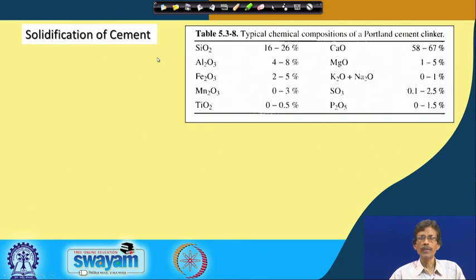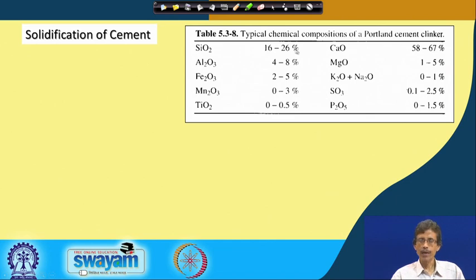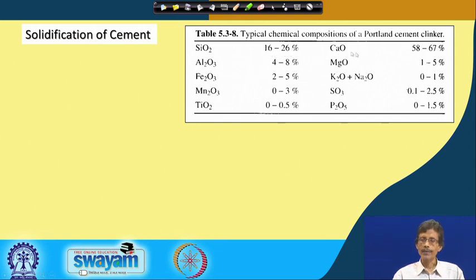Consider the different compositions achieved through tricalcium aluminate and calcium aluminium ferrate. The main component is CA₃S or CA₂S — tricalcium or dicalcium silicate. The main composition of Portland cement clinker is these two materials. The chemical composition tells you that silicon dioxide can vary from 16 to 26 percent, whereas calcium oxide is from 56 to 67 percent — a huge amount of calcium. Together these two account for over 93 percent of the material.